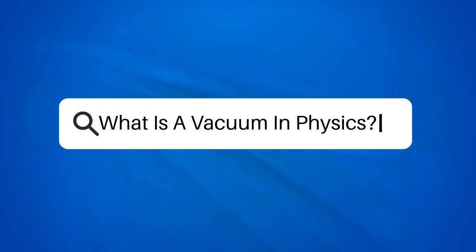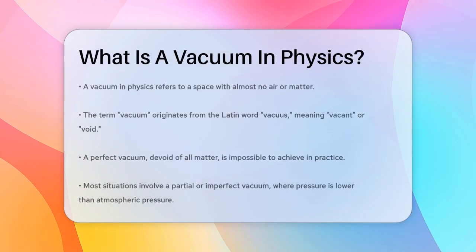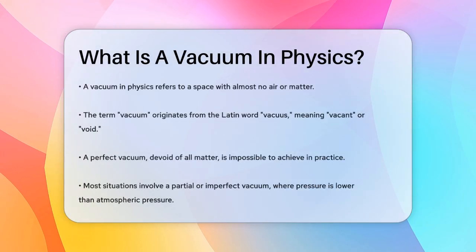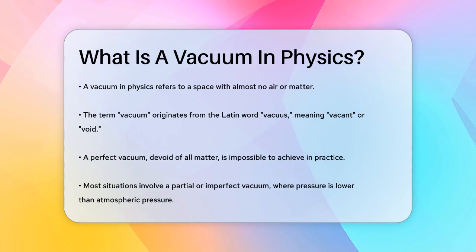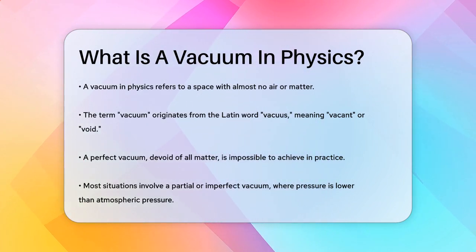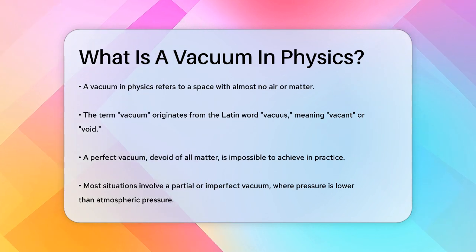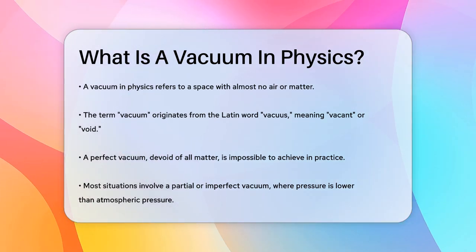What is a vacuum in physics? Imagine a space where there is almost no air or any other matter — this is what physicists mean by a vacuum. The word vacuum comes from the Latin adjective vacuus, which means vacant or void. In physics, a vacuum is essentially a region of space that is devoid of matter.